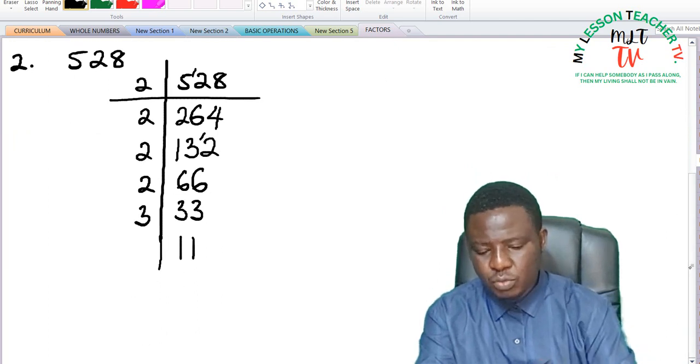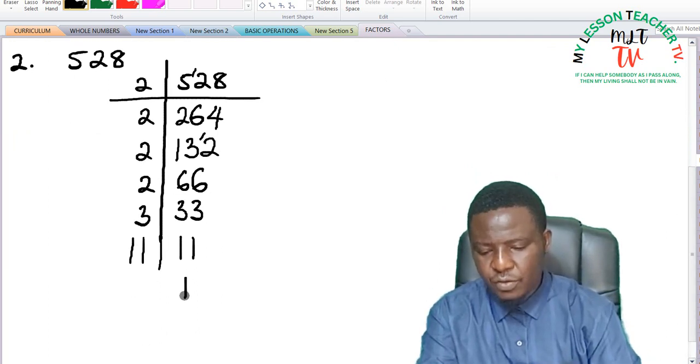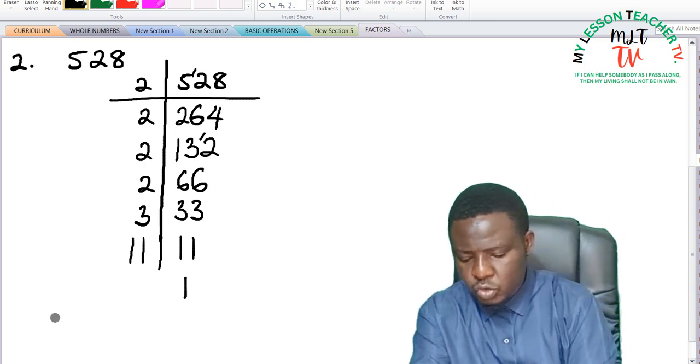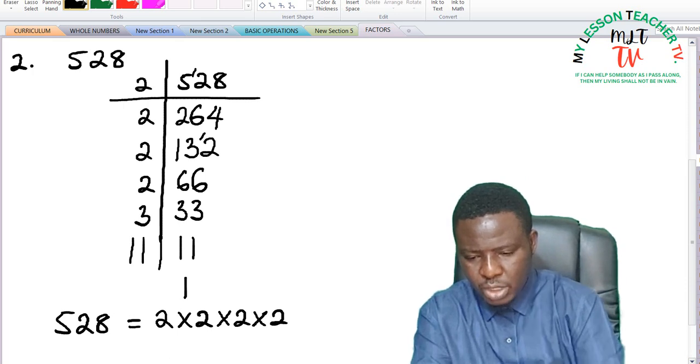And 11 is a prime factor. So 11 divided by itself is 1. So 528 can be expressed as 2 times 2 times 2 times 2. So that is 1, 2, 3, 4 times.